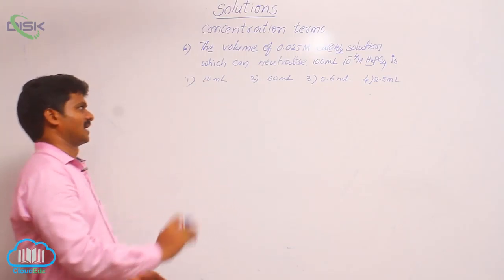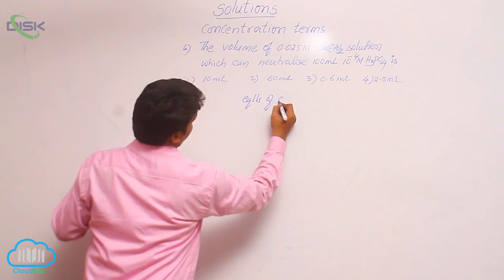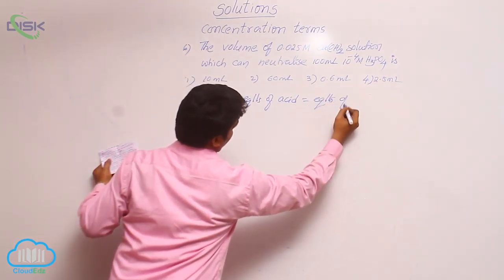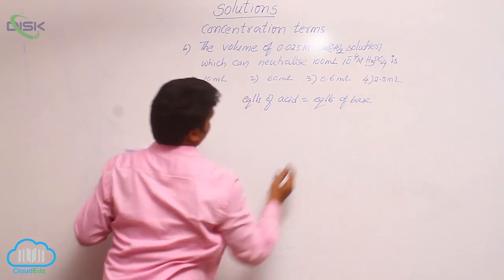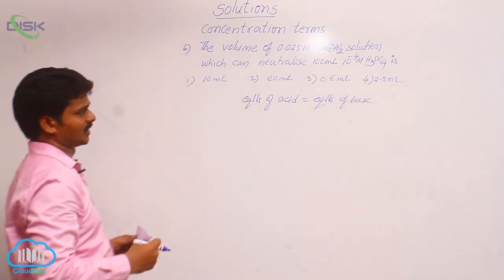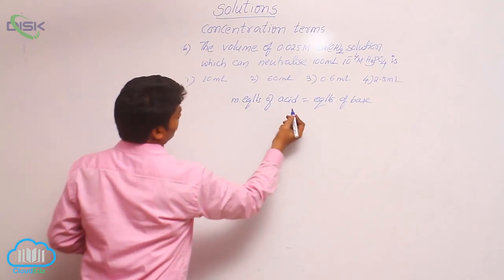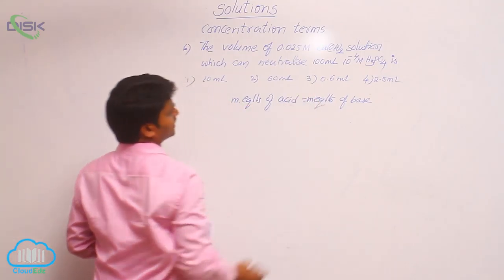In that, what is the relation? Equivalence of acid is equal to equivalence of base. This is the relation: equivalence of acid is equal to equivalence of base. In other words, milliequivalence of acid is equal to milliequivalence of base.